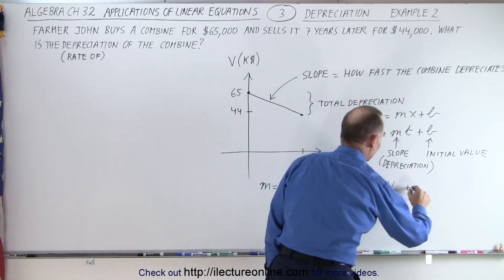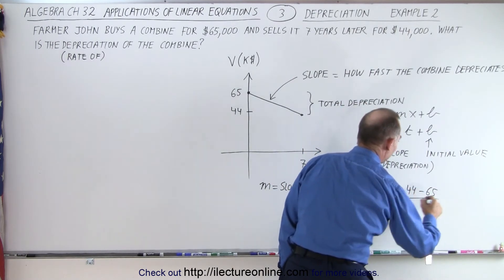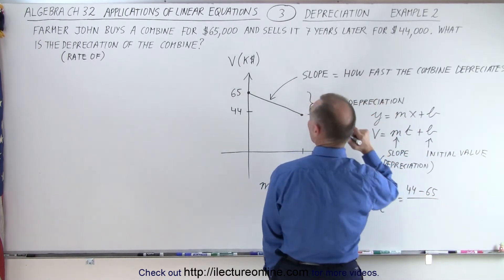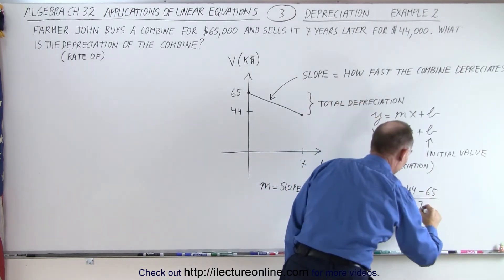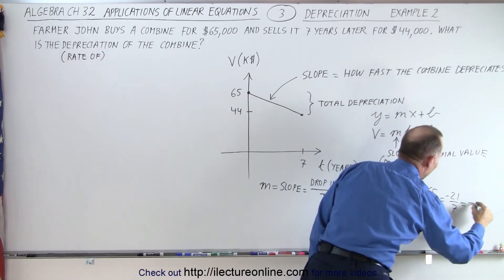So in this case, that will be 44 minus initial value of 65 divided by the total time elapsed, which was seven years. So this is equal to minus 21 over seven, which is equal to minus three.